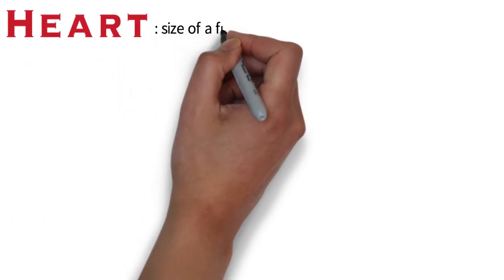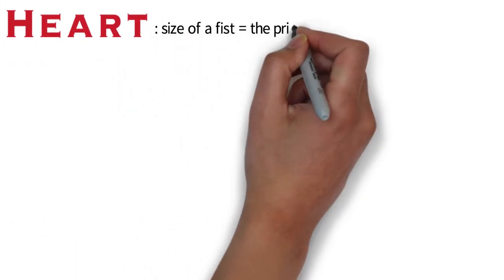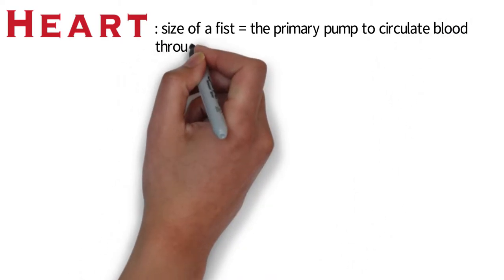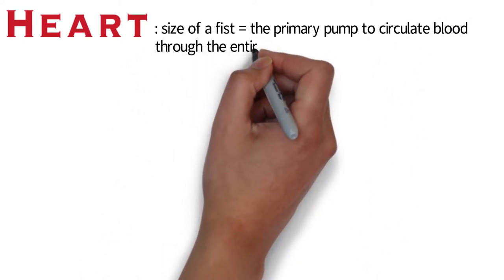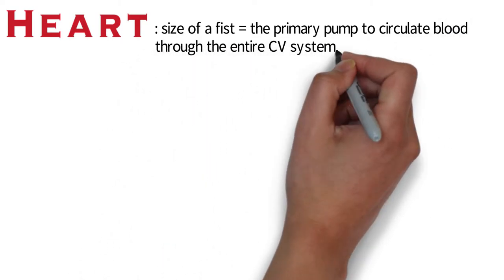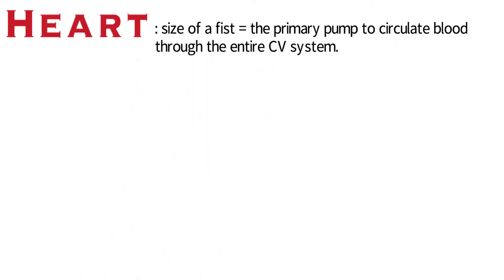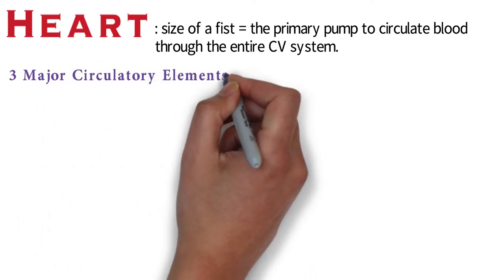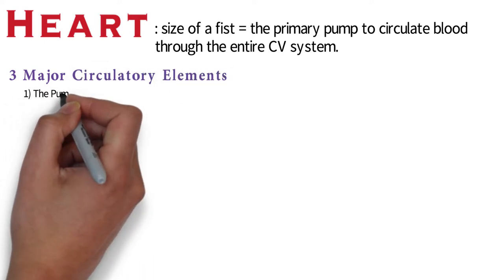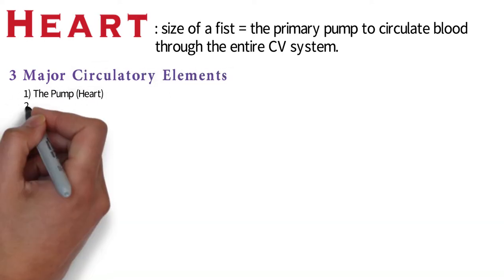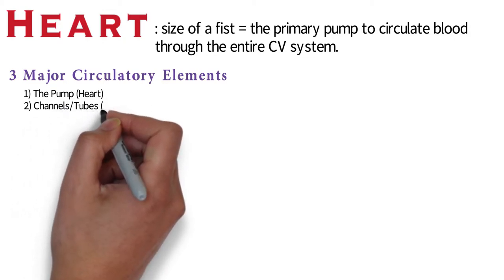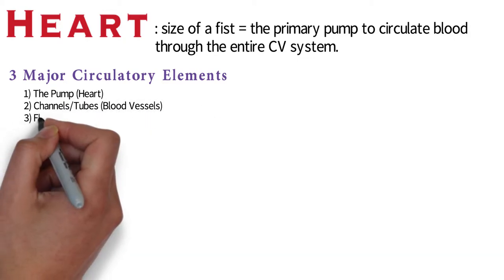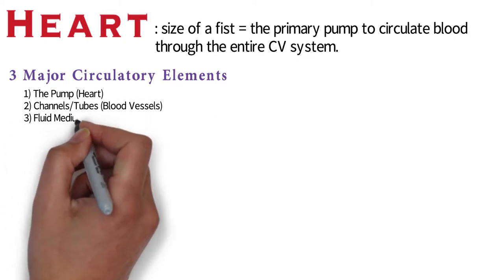The human heart is about the size of a fist and it serves as the primary pump to circulate blood through the entire cardiovascular system. There are three major circulatory elements: the pump, which is our heart; the channels and tubes, which are our blood vessels; and the fluid medium, which is our blood.